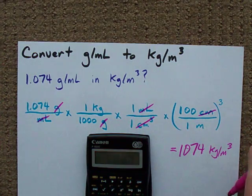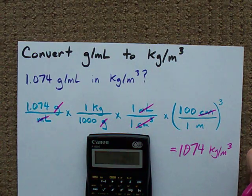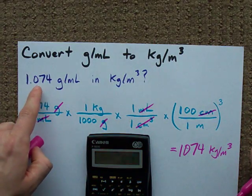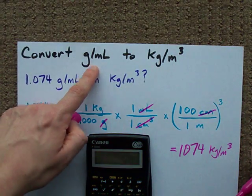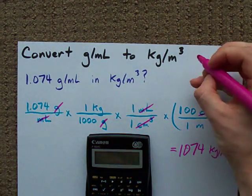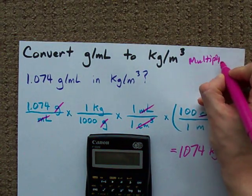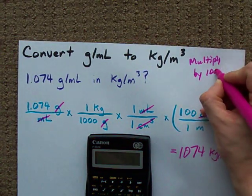Now, if you're looking for a trick, sorry I made you wait till the end. To convert from grams per milliliter to kilograms per meter cubed, your fast way is multiply by 1000.